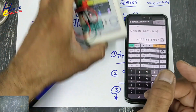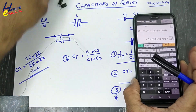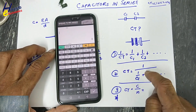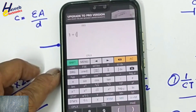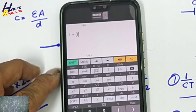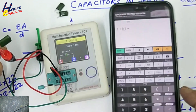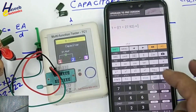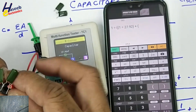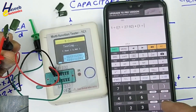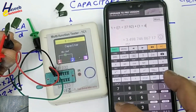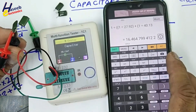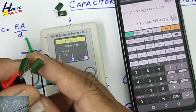So in this way we calculate the capacitor value. Let's verify using the formula method: 1 divided by CT equals 1 divided by 27.92 plus 1 divided by 27.92 plus 1 divided by 40.13. The total capacitance calculated is 16.64nF — the same result as what we measured.